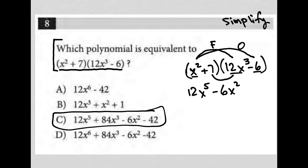And then the two inner things here, the I from FOIL, 7 times 12x to the third. That's a positive 84x to the third.